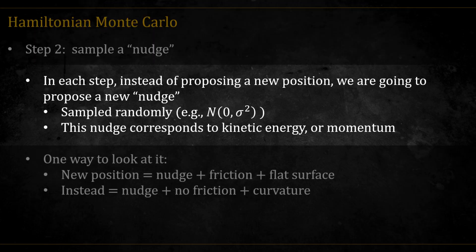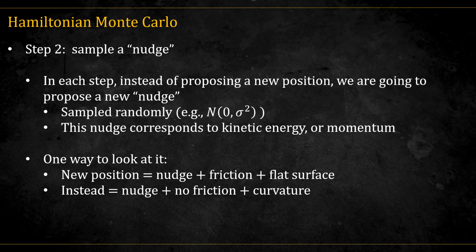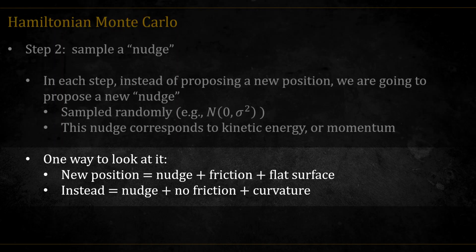The second step is to sample a nudge. So in each step of the algorithm, instead of proposing a new position, we are going to propose a new nudge. This nudge corresponds to kinetic energy or momentum. One way I look at it is that if we were to sample a new position, this would be equal to a nudge in a flat surface system with friction. But instead we are sampling a nudge in curved space without friction.